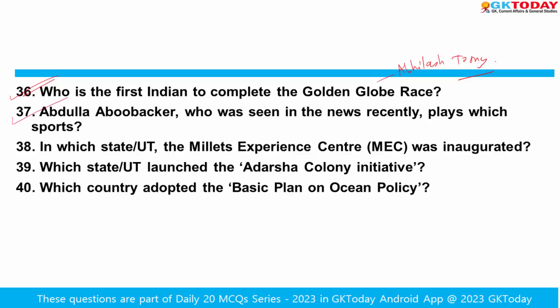Abdullah Abu Bakar was recently seen in the news — which sport is he associated with? He is associated with triple jump. He is a silver medalist in the Commonwealth Games and won gold in the Mikio Oda Memorial Athletics meet which happened in Japan.